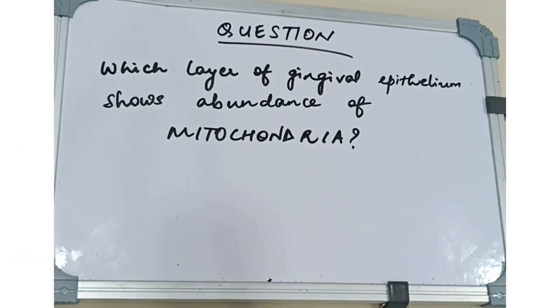So this was all about keratinization and the cells of gingiva. Hope you guys enjoyed it. The question for today is: which layer of gingival epithelium shows abundance of mitochondria? Comment the answers below. See you for the next video. Thank you for watching.